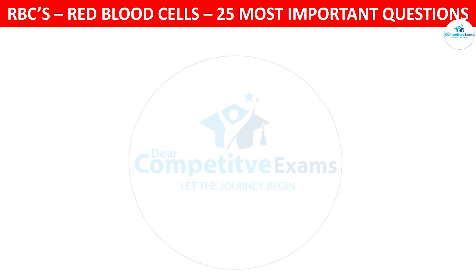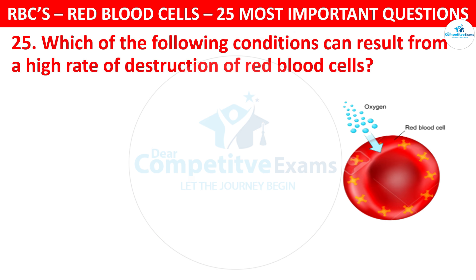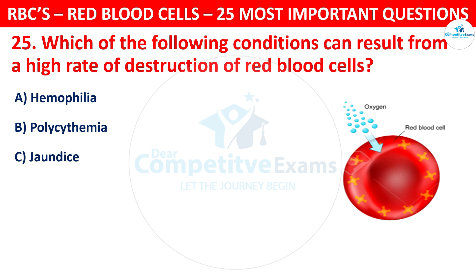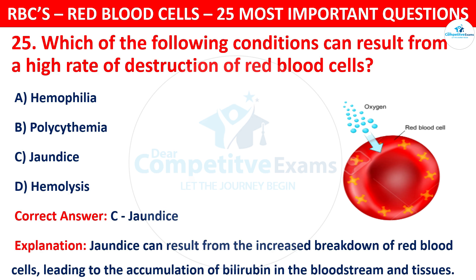Question 25. Which of the following conditions can result from a high rate of destruction of red blood cells? The options are: Hemophilia, Polycythemia, Jaundice, or Hemolysis. The correct answer is C, that is Jaundice. Jaundice can result from the increased breakdown of red blood cells, leading to the accumulation of bilirubin in the bloodstream and tissues.